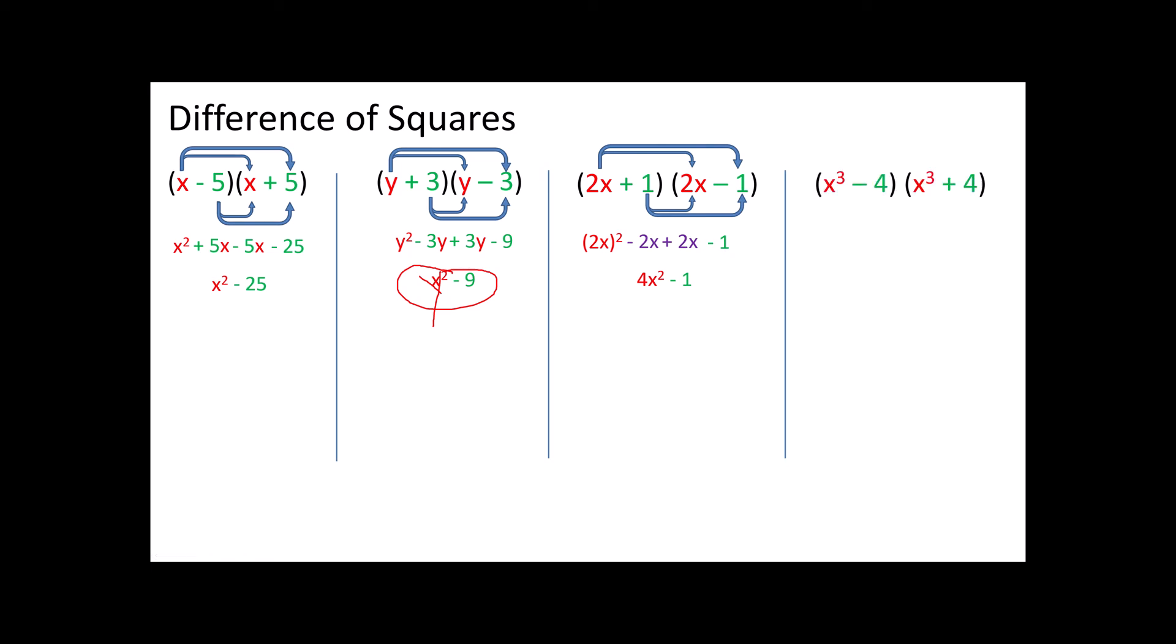If you're feeling really brave you can go ahead and pause the video and try this one on your own. You may even want to try it by skipping the middle step. I'm going to assume you've already done that and you've restarted to see if you're correct. So I'm going to take x³ times x³, which is x⁶ or x³ squared. x³ times 4 is plus 4x. Negative 4 times x³ which is negative 4x. And negative 4 times 4 which is negative 16. Once again those middle terms are going to disappear.